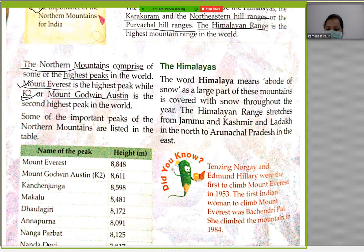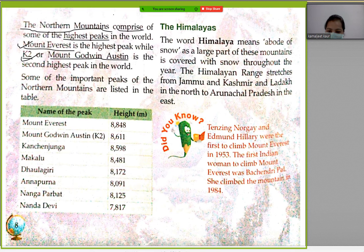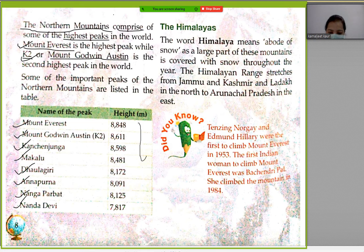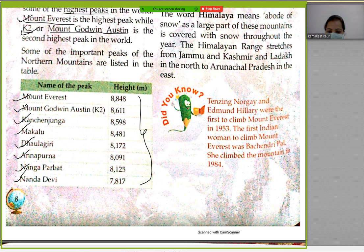Some of the important peaks of the northern mountains are listed in the table. The list includes: 1st Mount Everest, 2nd K2 (Mount Godwin-Austen), 3rd Kangchenjunga, 4th Makalu, 5th Dhaulagiri, 6th Annapurna, and others including Nanga Parbat. The height of each peak is also given in meters.